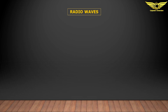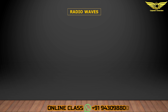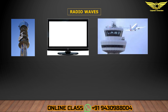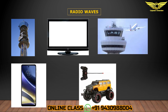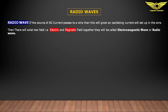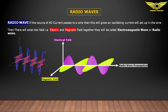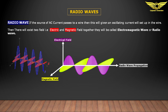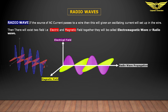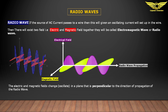The first chapter is radio wave. Radio waves are very simple — they are used in radio stations, television, navigation systems, ATC, mobile phones, and even remote control toys. The definition: if an AC current passes through a wire, an oscillating current is set up in the wire, and there will be two fields — electrical and magnetic — which together are called electromagnetic wave or radio wave.